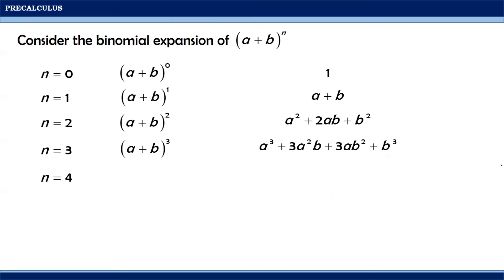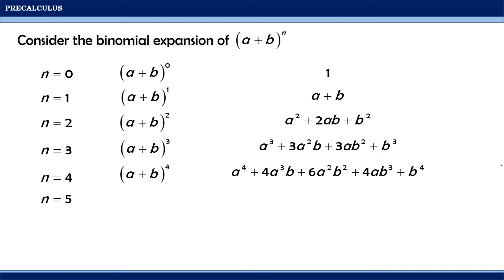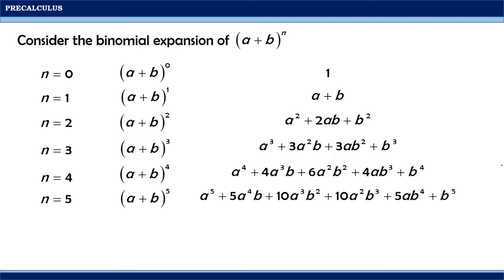If n is equal to 4, then (a + b)^4 = a⁴ + 4a³b + 6a²b² + 4ab³ + b⁴. If n is equal to 5, then (a + b)^5 = a⁵ + 5a⁴b + 10a³b² + 10a²b³ + 5ab⁴ + b⁵.